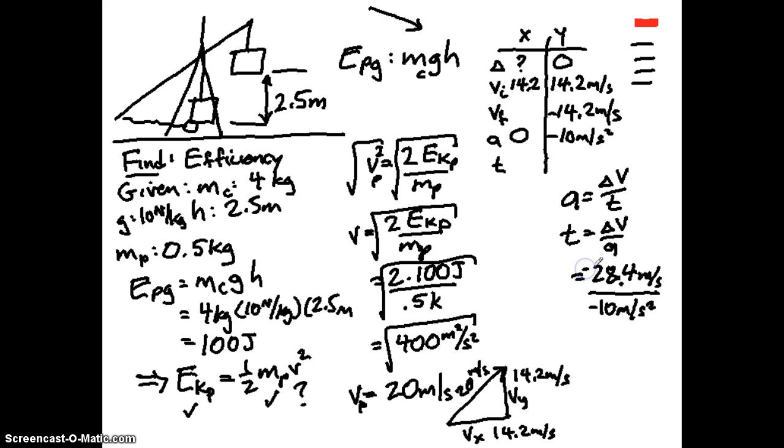And a correction, actually our change in velocity is negative. V2 is negative 14.2 minus our initial velocity. So how long are we up in the air? It's in the air for 2.8, I'm going to drop the 4, 2.8 seconds is our time.